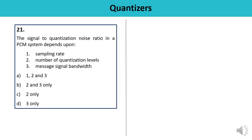Question 21: The signal-to-quantization noise ratio in a PCM system depends upon three factors — sampling rate (1), number of quantization levels (2), and message signal bandwidth (3). Options are: 1, 2 and 3; 2 and 3; 2 only; or 3 only. The SNR depends only upon the number of quantization levels. The answer is C — 2 only.